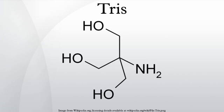Tris, also known as tromethamine, is an organic compound with the formula (HOCH₂)₃CNH₂. Tris is extensively used in biochemistry and molecular biology. In biochemistry, Tris is widely used as a component of buffer solutions, such as in TAE and TBE buffer, especially for solutions of nucleic acids.